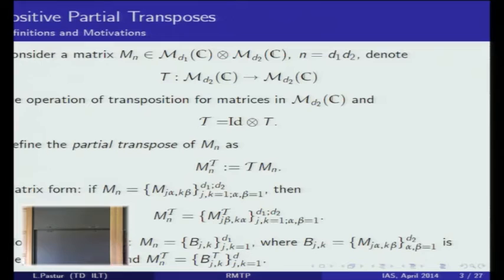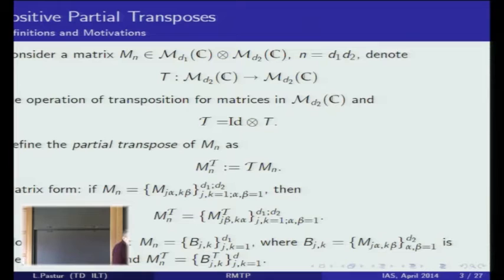Alternatively, fix the first indices j and k — you have block entry jk — and you just transpose every block, replacing each block by its transpose to get the new matrix. So you can entirely avoid tensor product language and simply view this as an operation on block matrices.